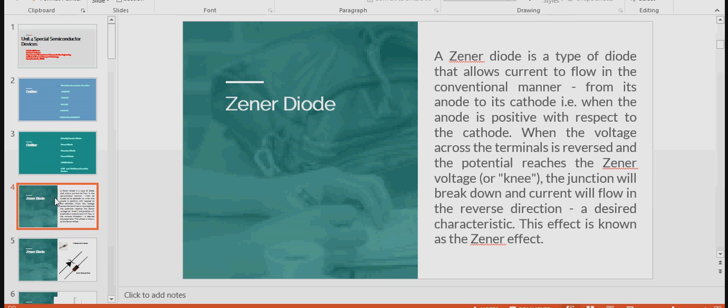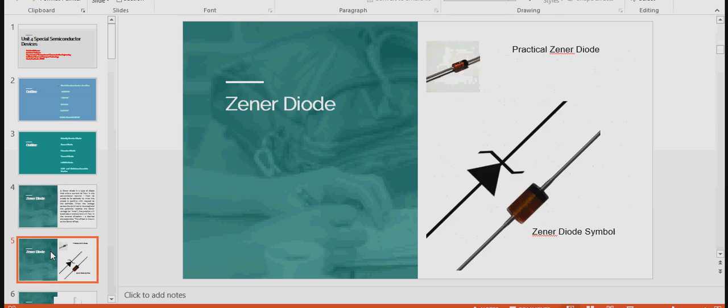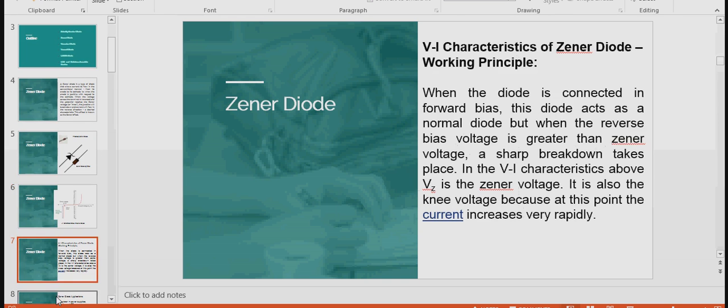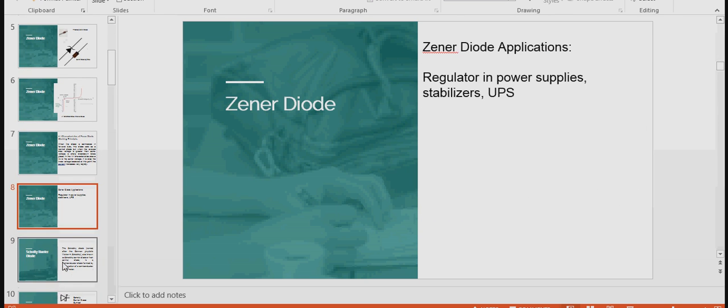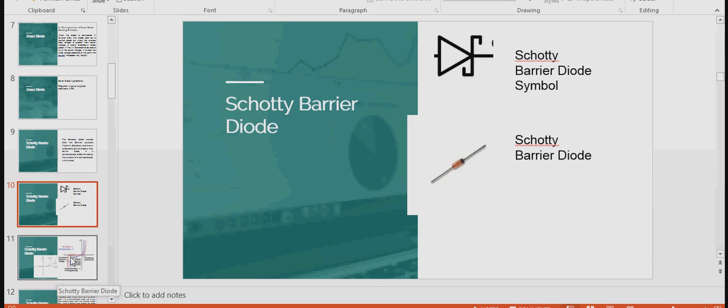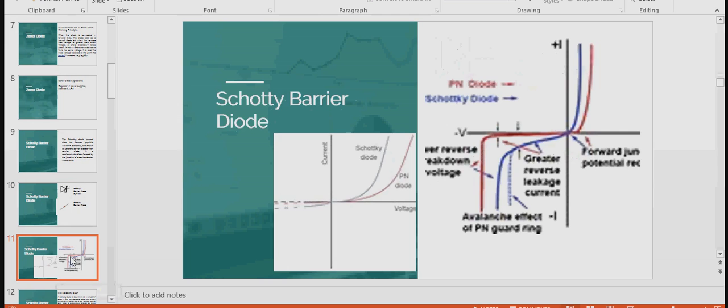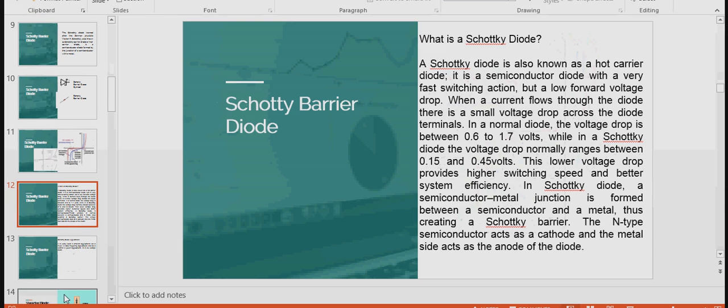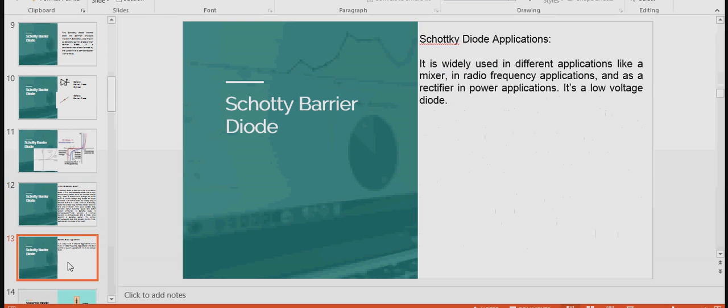In Class 1, we discussed what are the important topics present in Unit 4, and we discussed Zener Diode, its symbol, sample of Zener Diodes, its V-I characteristics, applications, NEV voltage, working principle, and applications of Schottky Barrier Diode.